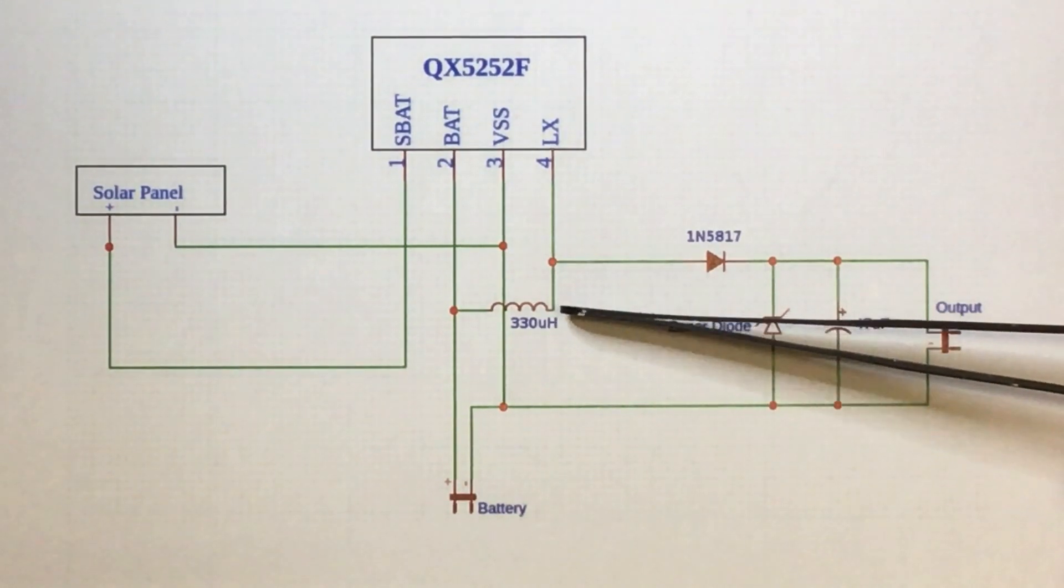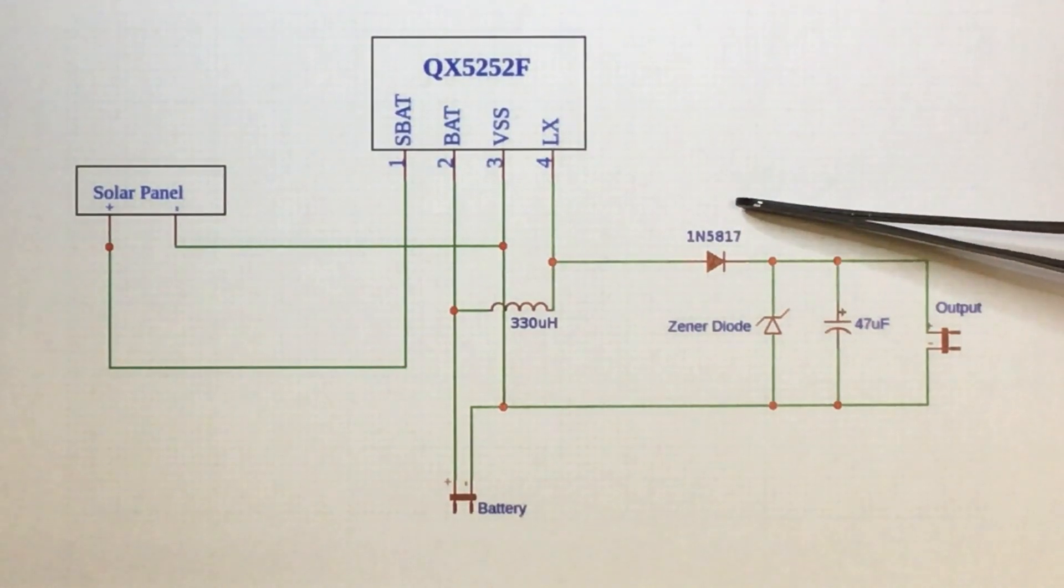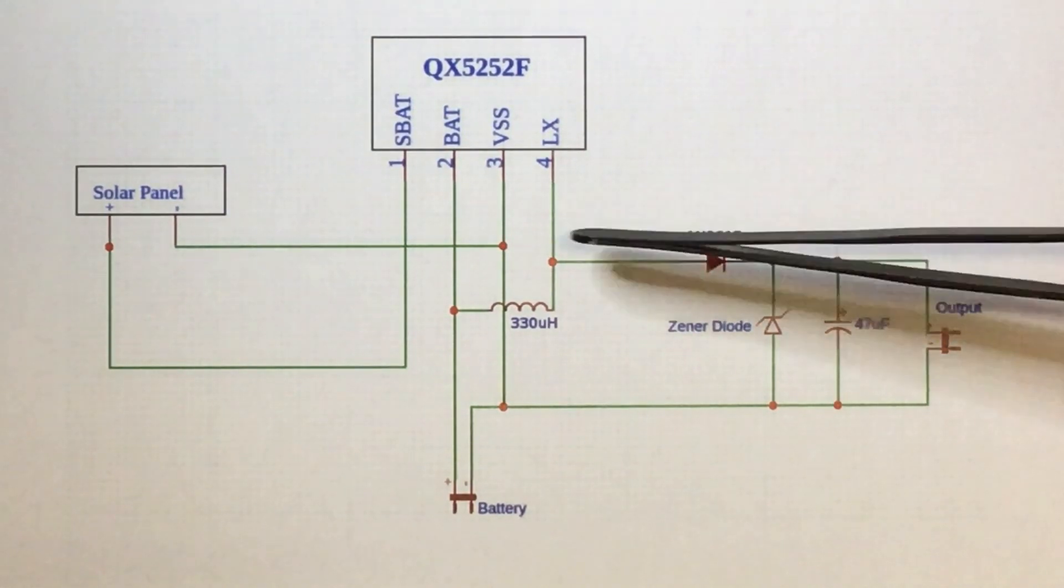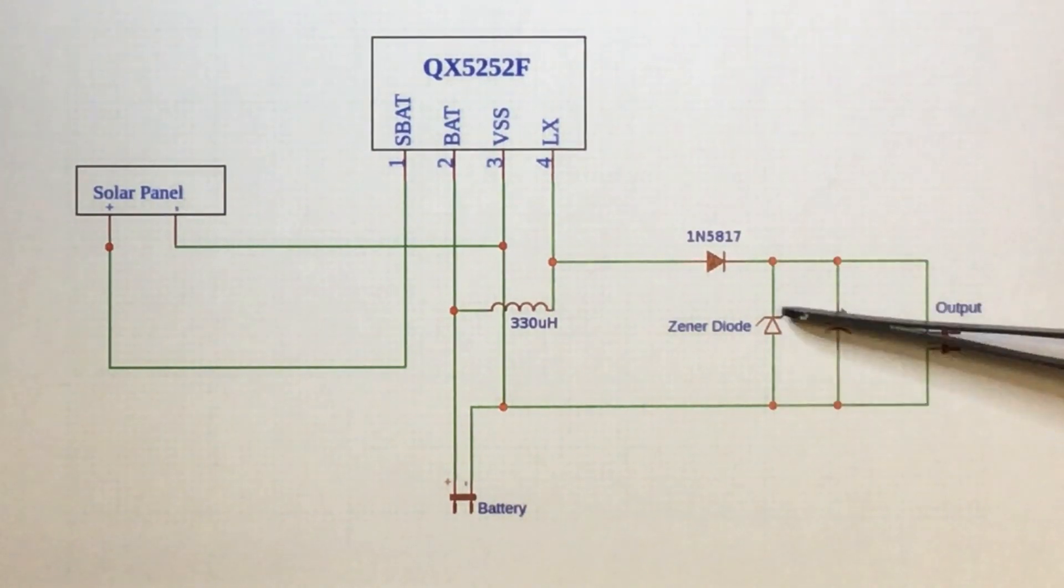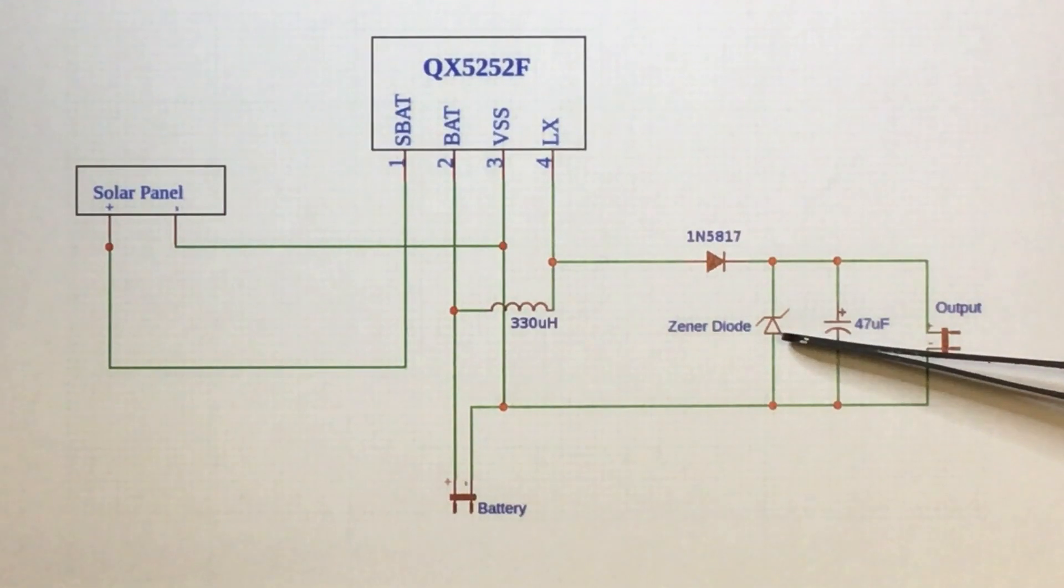You've got a Schottky diode here with a low forward voltage so that everything gets through as much as possible. A zener here which will set the voltage on the output, so I generally use about a 5.1 or a 4.7 for that.